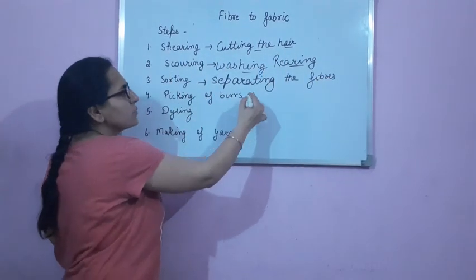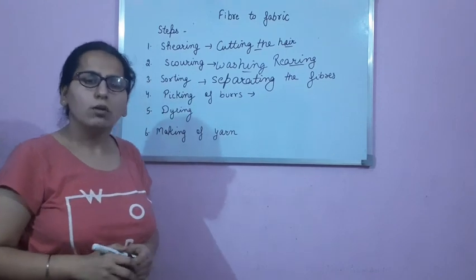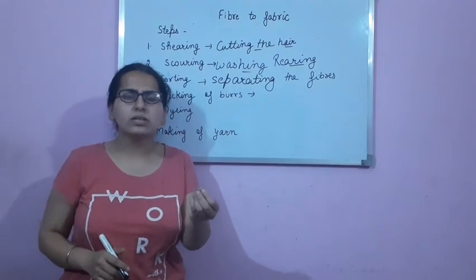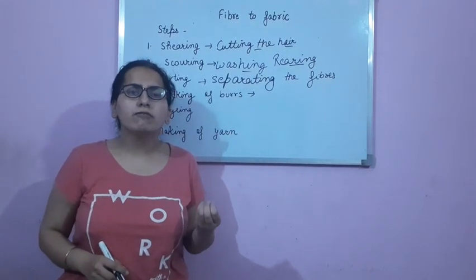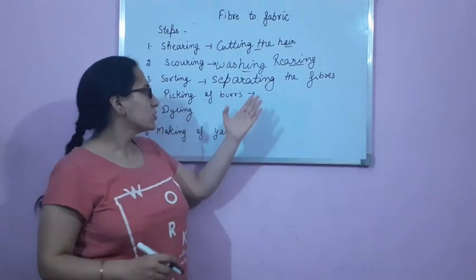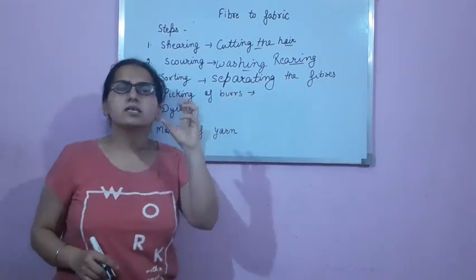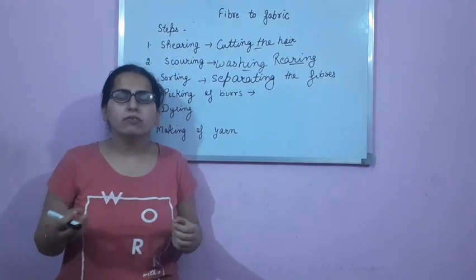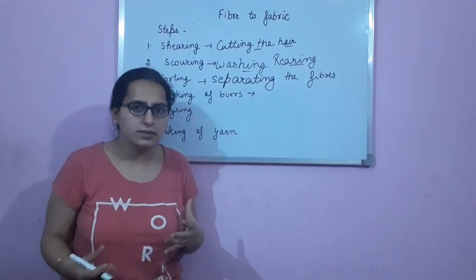Next is picking of burrs. Burrs — you might have seen these — are small fluffy structures. So in the fourth step, these small fluffy structures are removed with the help of the hand.